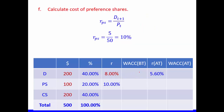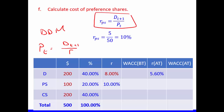The next part is to calculate the cost of preference shares, which wasn't given. Using the dividend discount model, the share price of a preference share equals the dividend at t+1 divided by r. Rearranging, the cost of preference shares equals dividend divided by price: $5 divided by $50 = 10%. We put 10% into our table.